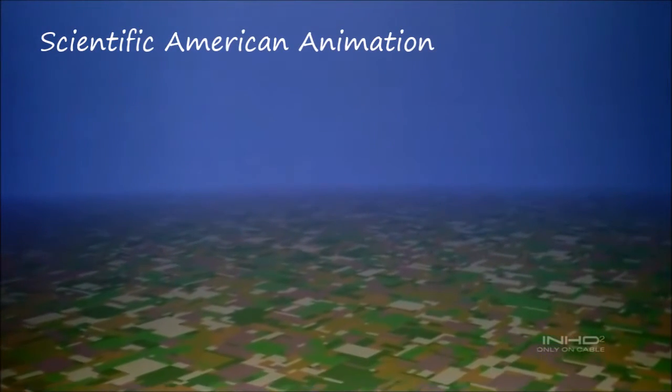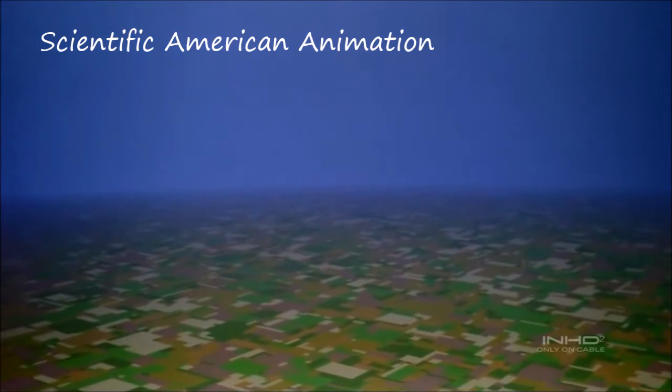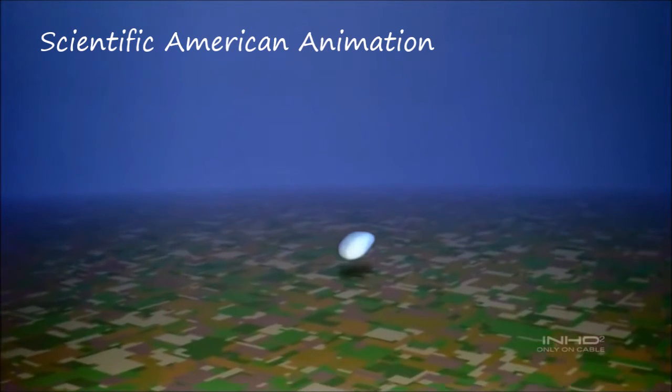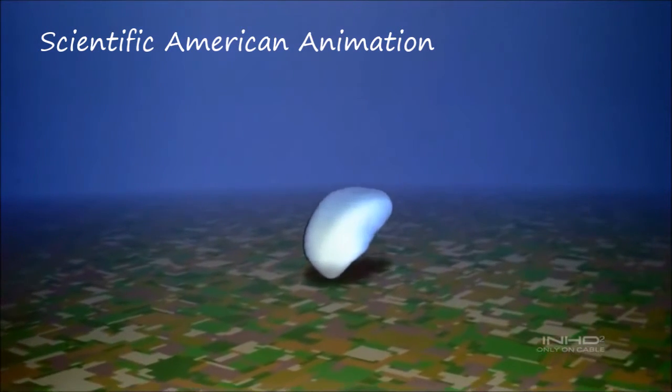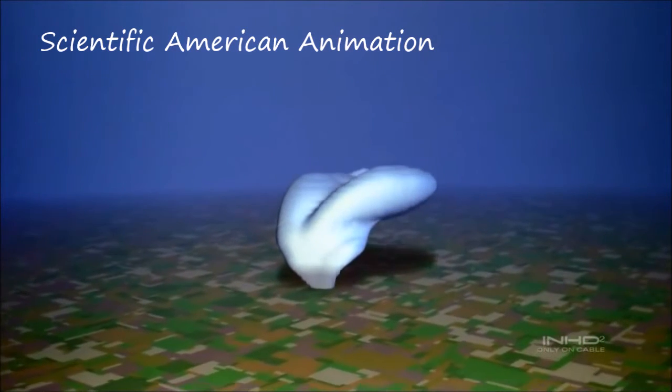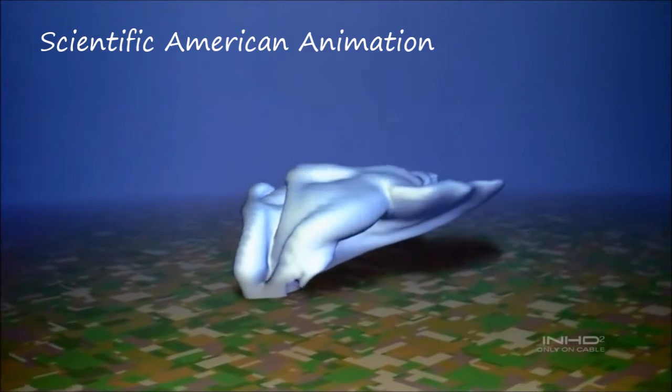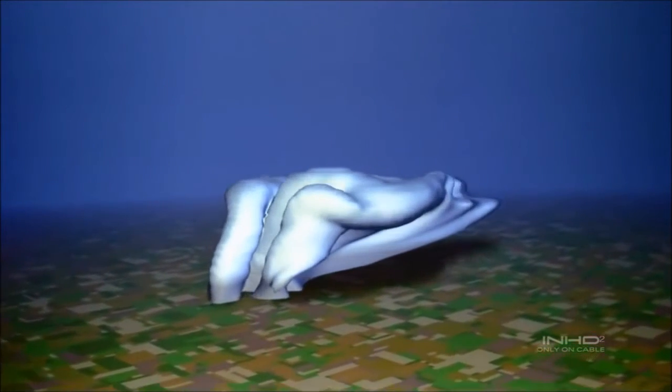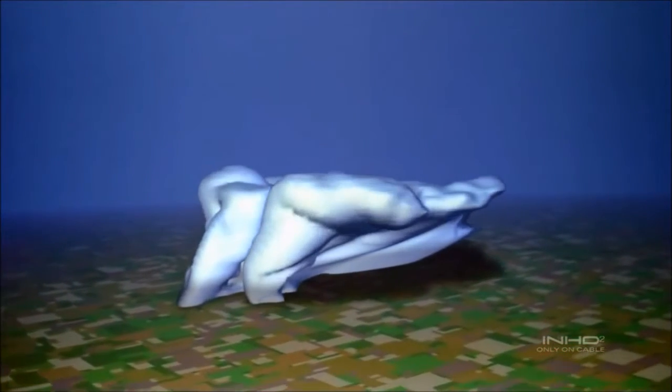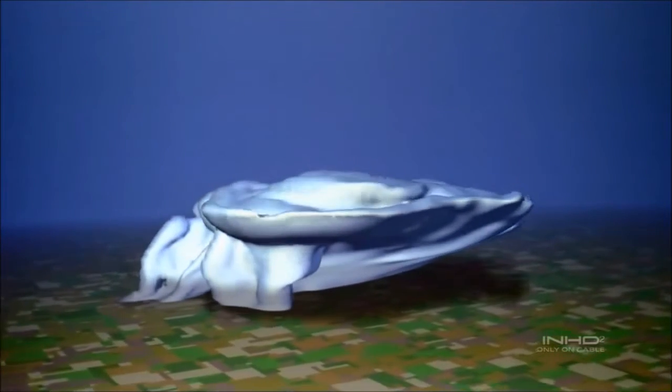A thunderstorm begins when warm, humid air near the ground becomes unstable and rises, condensing into water drops to form a cloud. When the cloud grows and reaches the cold environment of the upper atmosphere as much as 10 miles high, it flattens out, forming an anvil shape which spreads away from the base of the storm.